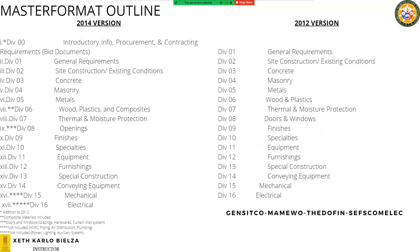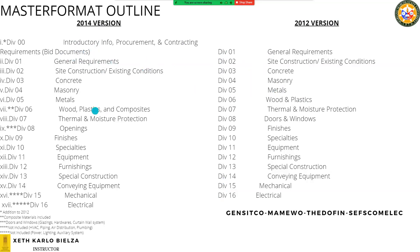In Master Format, the latest version is 2014, which now has 17 divisions. However, what we are going to discuss is the 2012 version, which has 16 divisions. What was added in the 2014 version is the bid or tender documents. Otherwise, they are mostly the same — with changes such as Division 6 being upgraded to 'Wood, Plastics, and Composites' whereas the older version was just 'Wood and Plastics,' and composite materials were added in. Division 8 was also renamed to cover all openings or fenestrations, whereas previously in 2012 it was just 'Doors and Windows.'